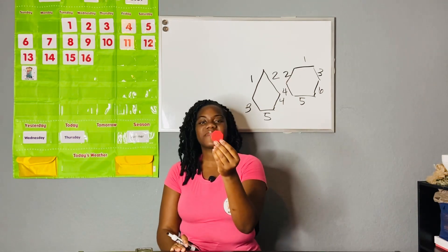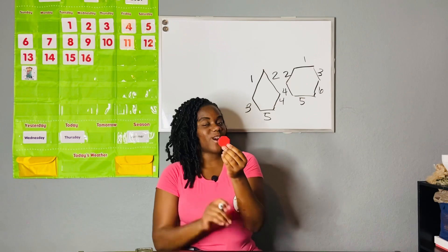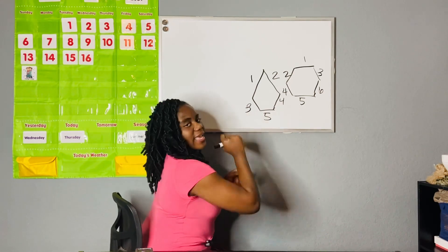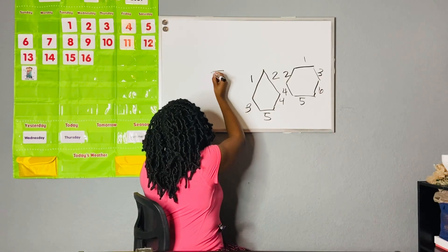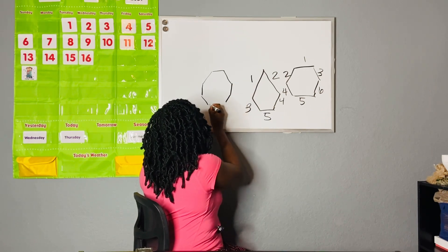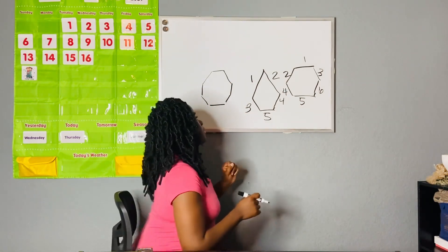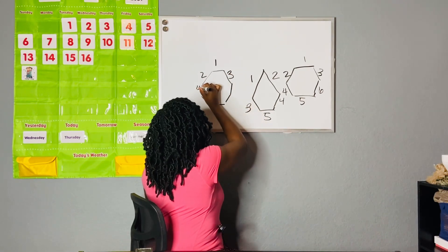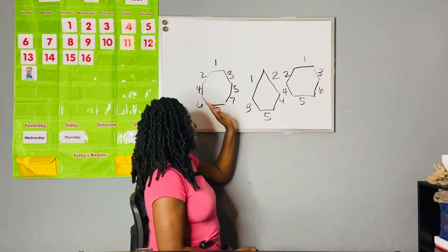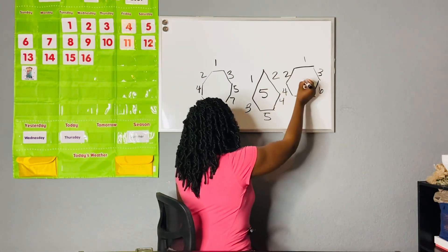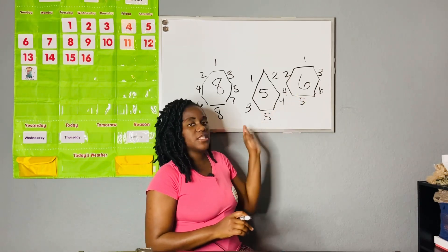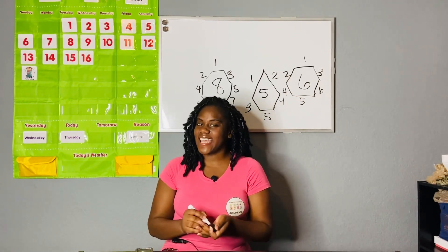We also have another shape that ends in 'agon' — do you remember the name? If you said octagon, you are correct! Let's draw our octagon so we can see the difference between the pentagon, hexagon, and octagon. The pentagon has five, the hexagon has six, and the octagon has eight sides.